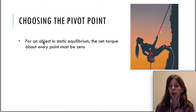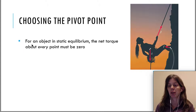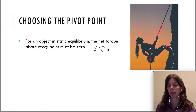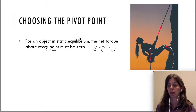When you're choosing a pivot point and you have an object in static equilibrium, the net torque about every point must be zero. We just talked about that one of the conditions was the net torque must be zero, but it doesn't matter where you choose the pivot point — it must be zero about any point.